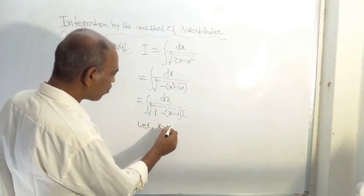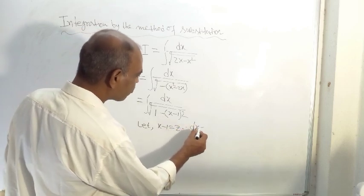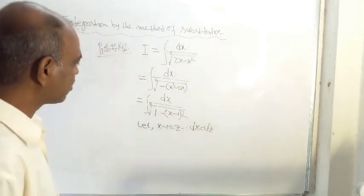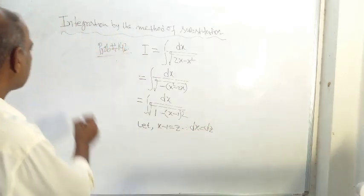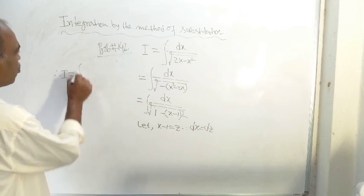Now let x minus one equal z. Differentiate both sides, we are getting dx equal to dz. Therefore the given integral becomes I equal to integration of dz...